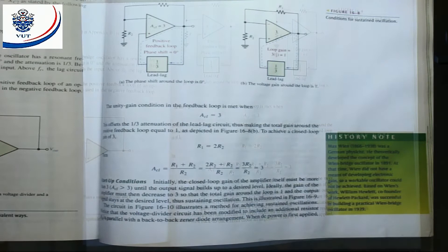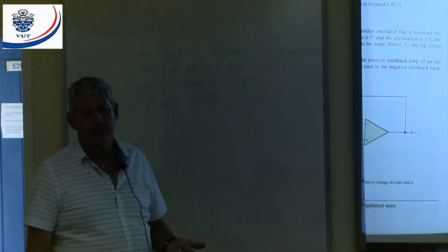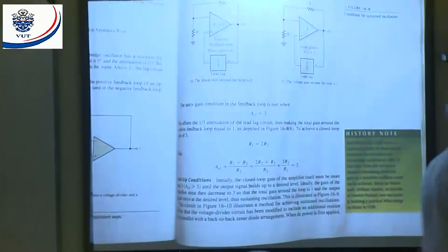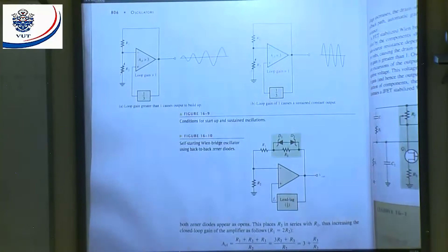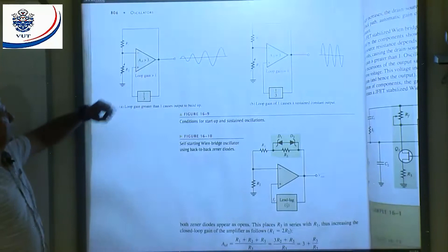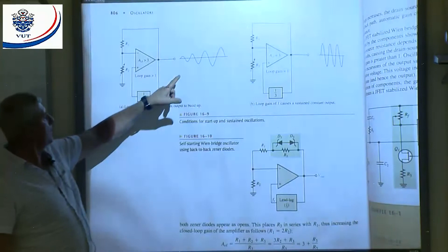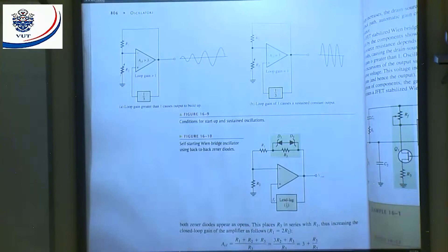We need start-up conditions. For starting up, what should the gain be? The closed-loop gain should be larger than one. We look at this circuit — if you make R2 variable, I can increase my gain for starting up. When it's oscillating, I can decrease the gain a little bit to make sure my loop gain is equal to one. But that's not very practical to sit there with a variable resistor.